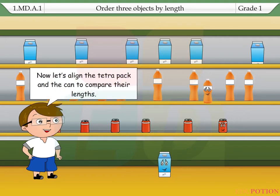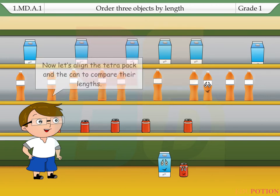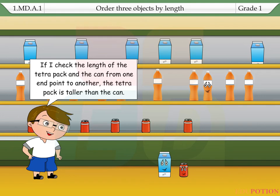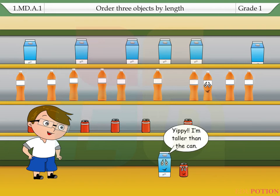Now, let's align the Tetra Pak and the can to compare their lengths. If I check the length of the Tetra Pak and the can from one end point to another, the Tetra Pak is taller than the can. Yippee! I'm taller than the can.